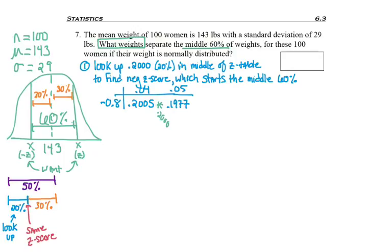I find how far away the two numbers I got were. One is five away, one is 23 away. I mean, one's above and below, but I'm not worrying about that. So since five away is closer, I'm going to use the z-score that came from the negative 0.8 with a 4 on the end.